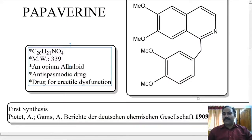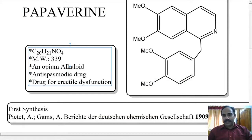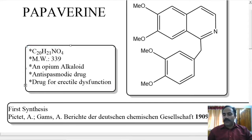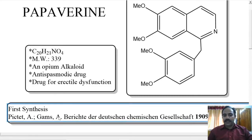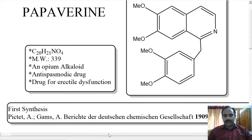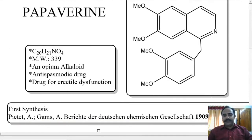Hi and hello all. Let us have a look at the synthesis of papaverine. The molecular formula is C20H21NO4 and the molecular weight is 339. It is an opium alkaloid, an antispasmodic drug, and a drug for erectile dysfunction. The first synthesis was reported by Pictet and Gams, with a number of improvements made since. One important aspect of this synthesis is the cyclization using the Bischler-Napieralski reaction.